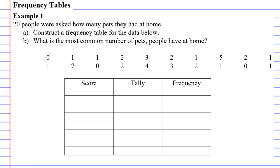people were asked how many pets they had at home. If we look here we got 20 results. Some people had zero pets at home, there was one person with seven pets at home, lots of different numbers here.